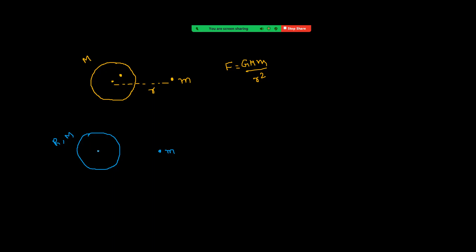Using that logic for the solid sphere — this solid sphere can be taken as a combination of spherical shells. We can replace each spherical shell with a point mass at its center of mass. That means we can replace the entire mass of a solid sphere with a point mass at its center. Taking it as a combination of spherical shells and replacing each shell's mass at the center of mass, the entire mass ends up at the center of mass.